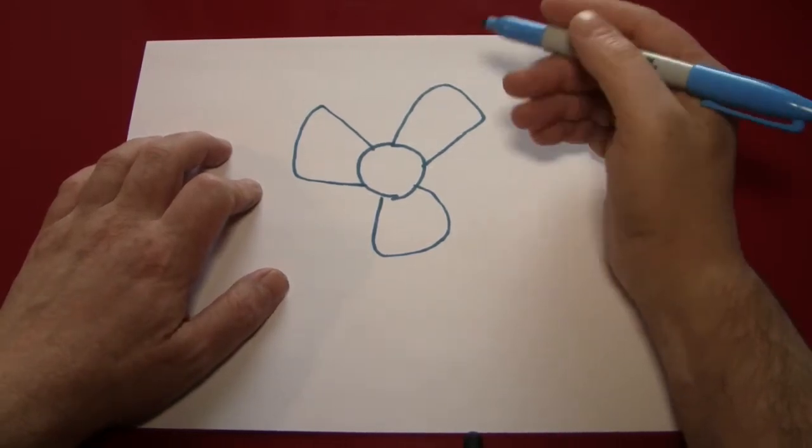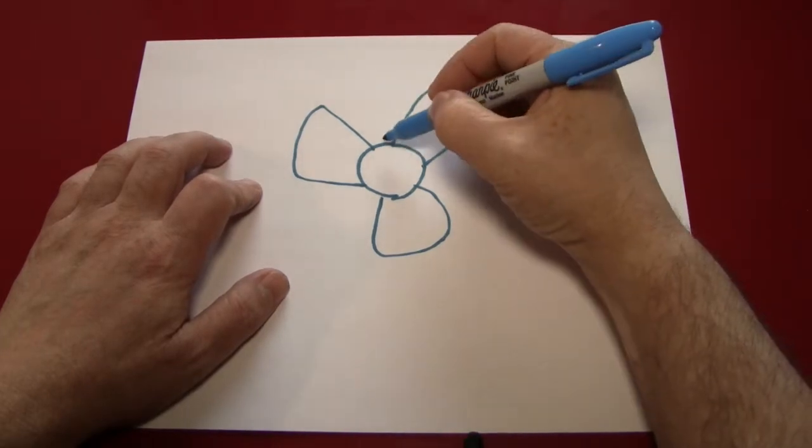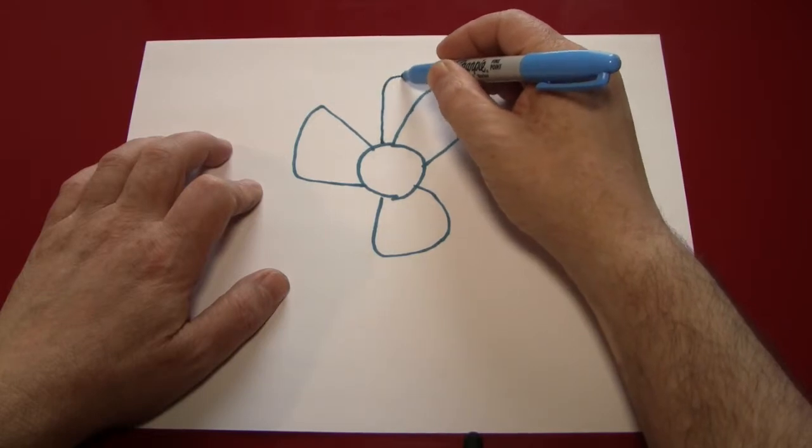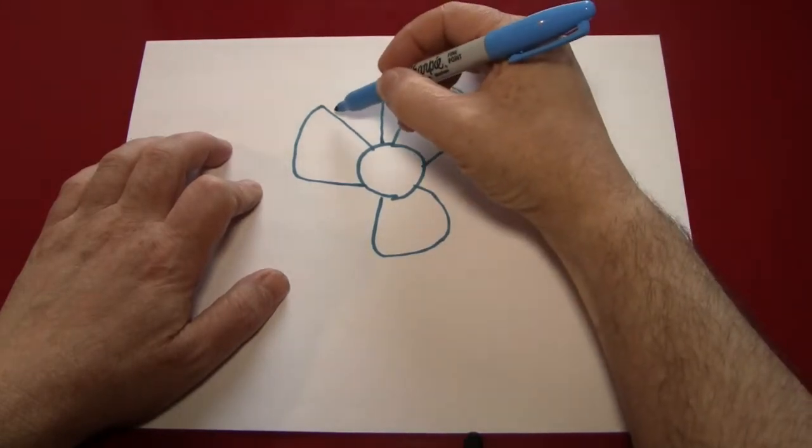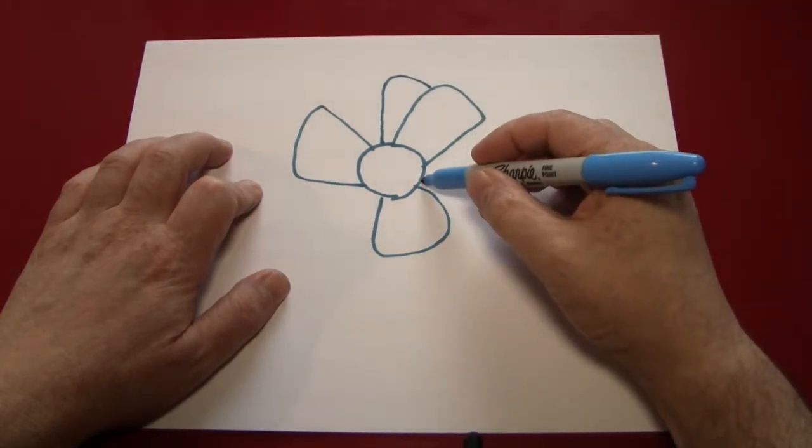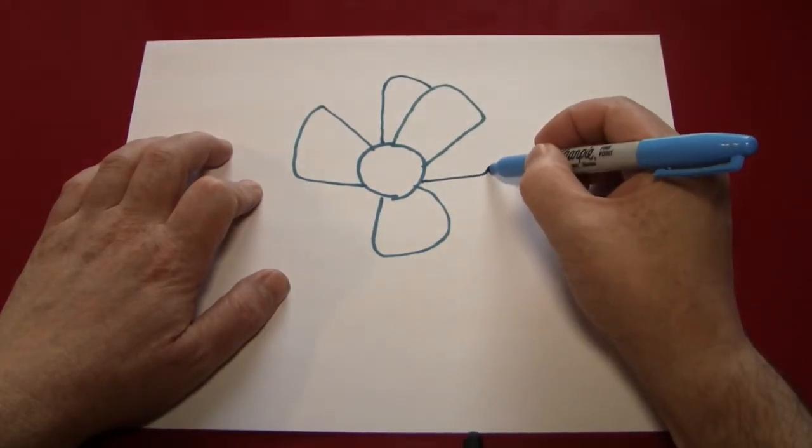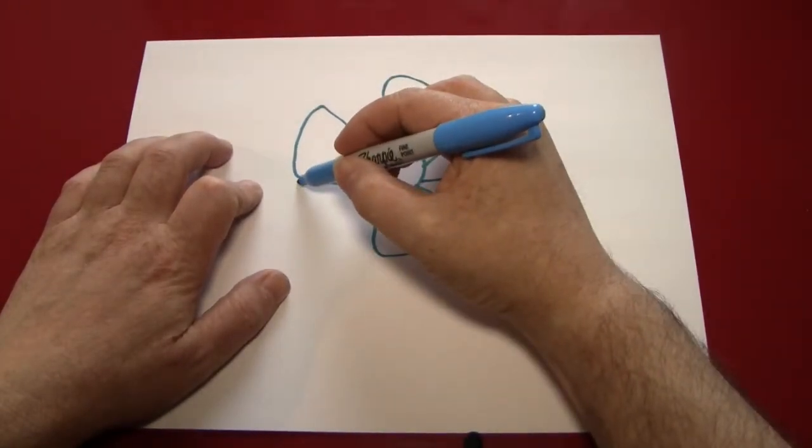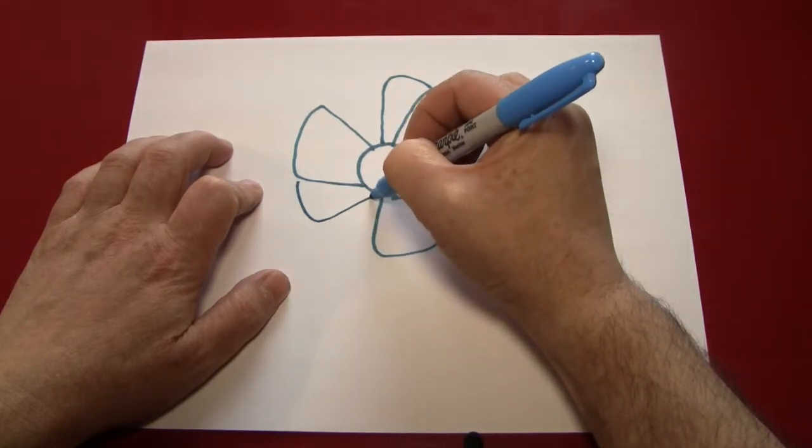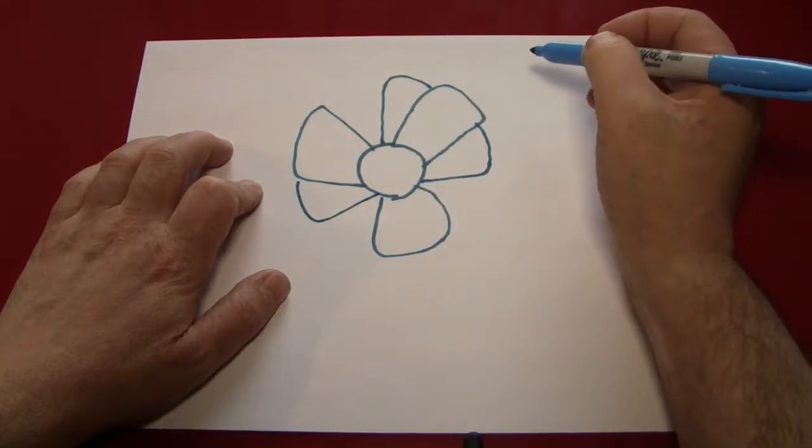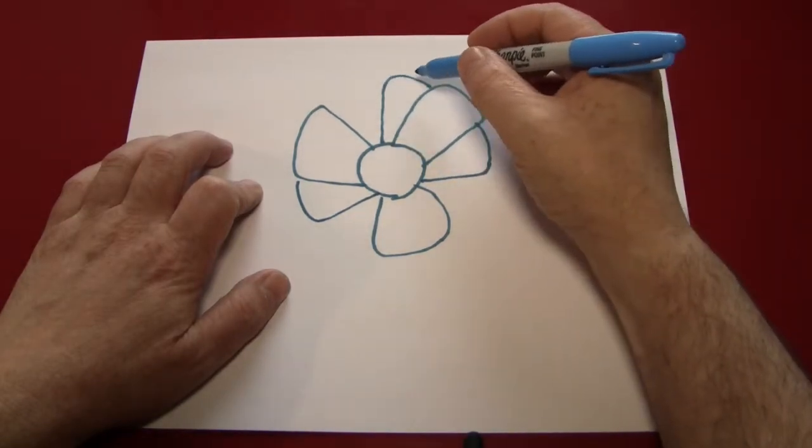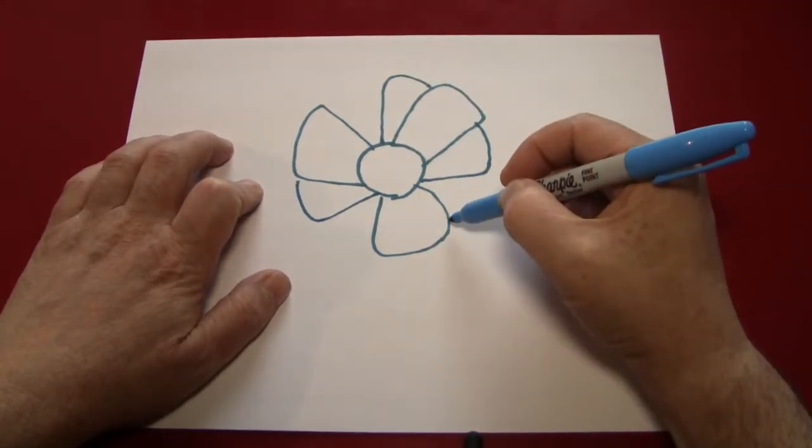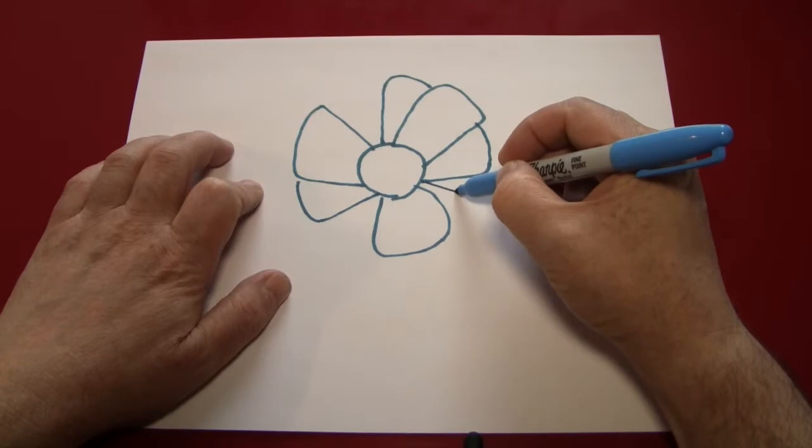Next, we're making the secondary and third rows by coming between the petals we already drew and making little half petals. You can do it on either side, left or right. And it doesn't have to be a half. It could be three quarters or nine tenths of a petal. The idea is that you draw the petal up and over and let it get cut off by one of the front petals.